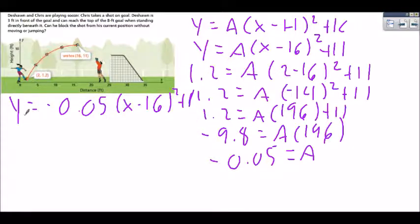We have to put in his point and see if he can reach it. So his highest point is 8, so that means y is going to be 8 and he is 3 feet from the goal. So if the goal is at 25, that means that he is at 22. So I'm going to put 22 in for x and then solve and see if he can get it.